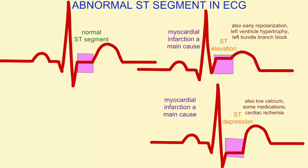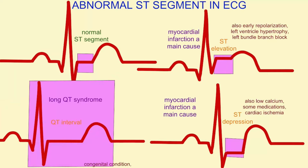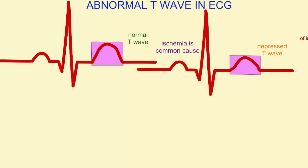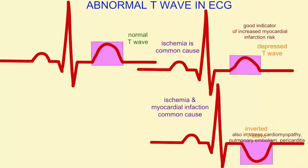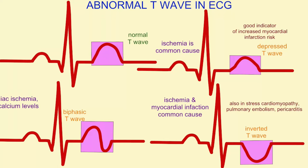The length of the interval between the beginning of the Q wave and the end of T, known as the QT interval, can be long in what's known as long QT syndrome, which is often congenital — something that someone is born with — although certain medications can also affect it. The T wave represents the repolarization of the ventricles, and there are a number of abnormal shapes of the T wave. It can be depressed or even inverted. This is typically the result of ischemia or the narrowing of cardiac blood vessels limiting oxygen flow to cardiac muscle, and is a good indicator of the risk of myocardial infarction. There are also other causes such as pulmonary embolism or pericarditis. The T wave can even be biphasic.